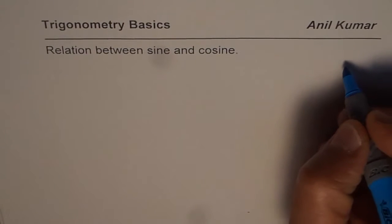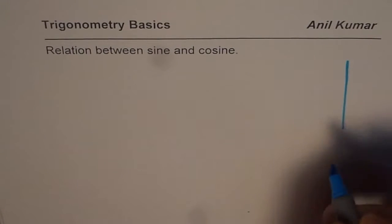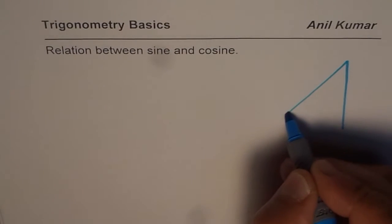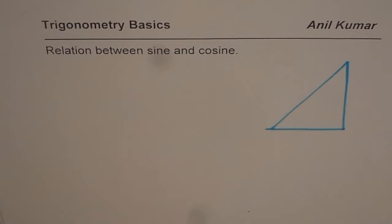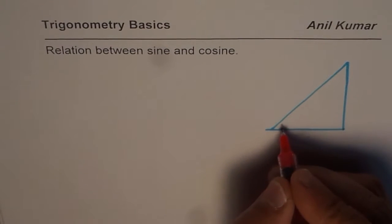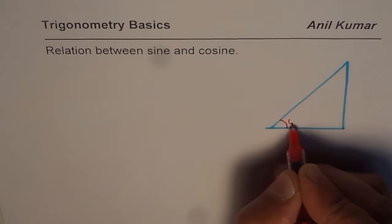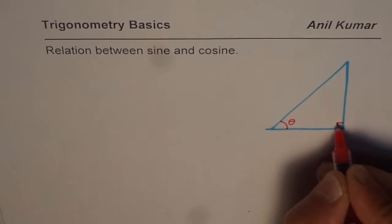So let me begin by sketching one right triangle. Let us say this is the right triangle for us. Where the angle given to us is angle theta and this is the right triangle.